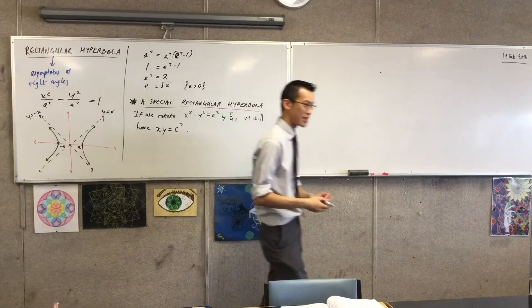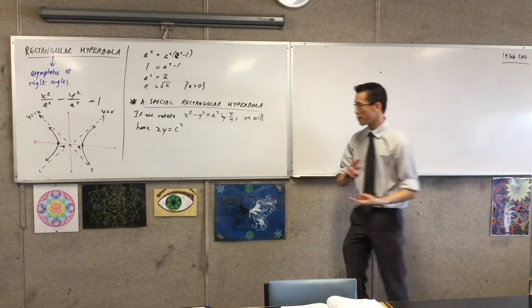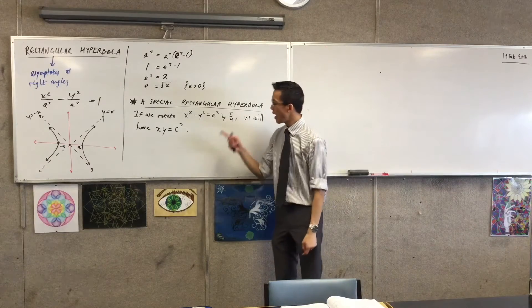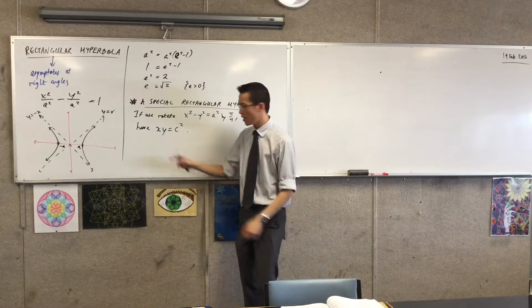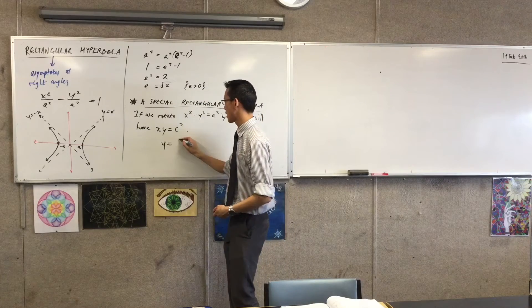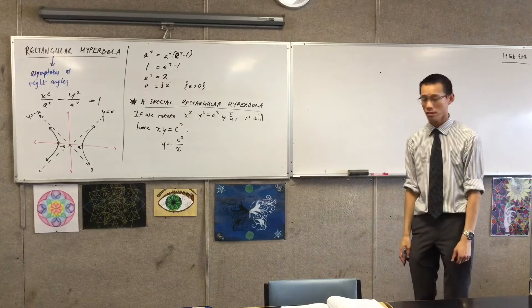Now they write c squared because that value there is still a constant, but number one, it has to be positive for this particular one. And also, it's not a, it's different from a. Now this guy here, you might be more familiar with seeing him like this. So this is 1 on x and all of his cousins. Does that make sense?